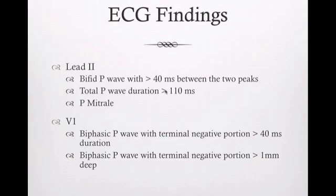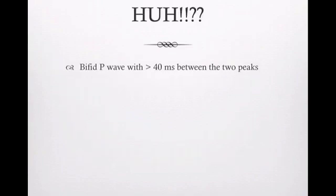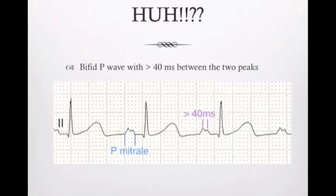Total P wave duration greater than 110 milliseconds is also a criterion. You're also going to see a biphasic P in V1 with the terminal negative portion greater than 40 milliseconds. In left atrial hypertrophy the P waves are longer and notched - this is P mitrale. Finding the two peaks and counting between them: one small box is 0.04 seconds, that's 40 milliseconds. If it's greater than that, this is left atrial hypertrophy. If the entire P wave distance is greater than 110 milliseconds, you also have left atrial hypertrophy.